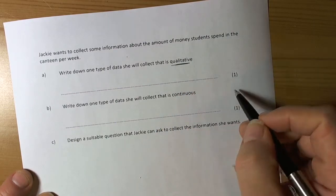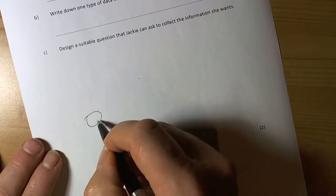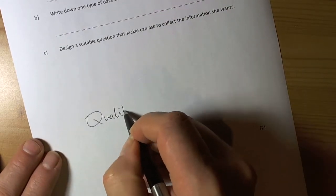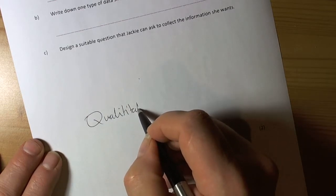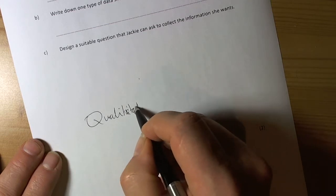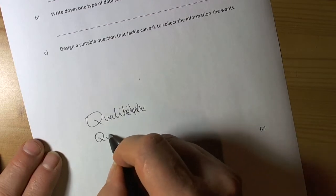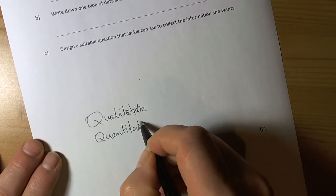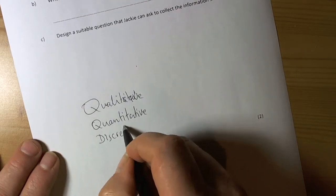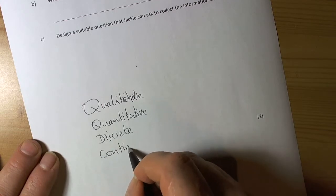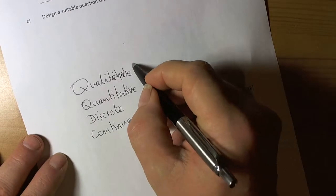We've got to remind ourselves what types of data there are. There are qualitative data types, quantitative data types, discrete data types, and continuous data types.